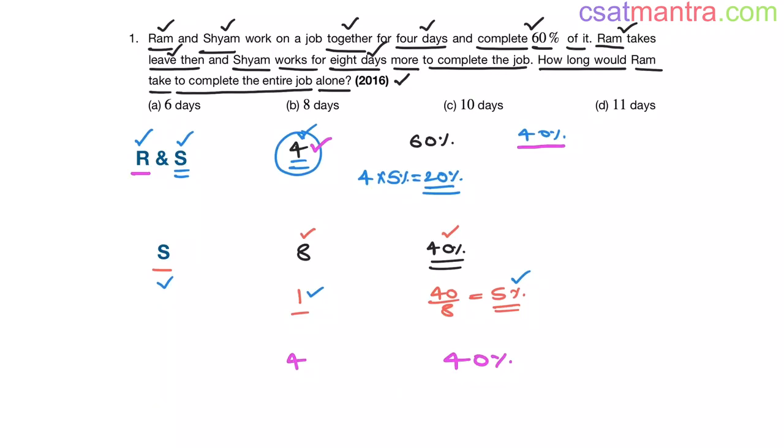That means he has completed 10% of the work in 1 day. So, to complete the entire job, that is 100% of the work, he would need 10 days. So, our answer is C.